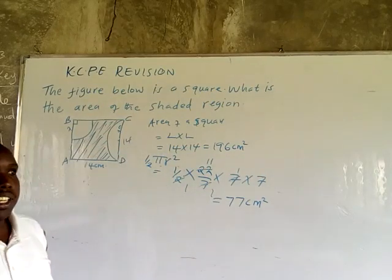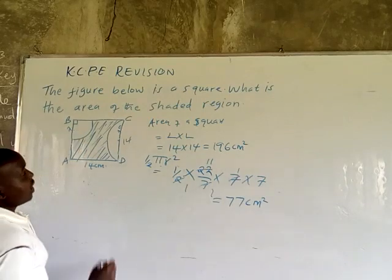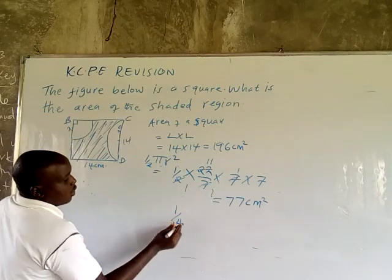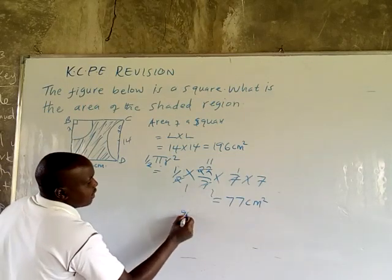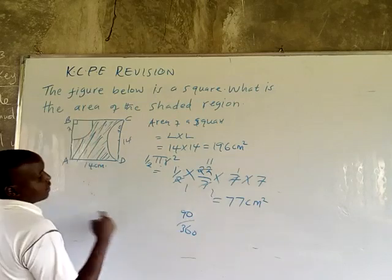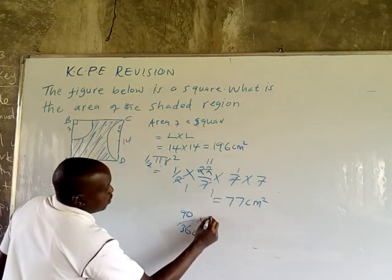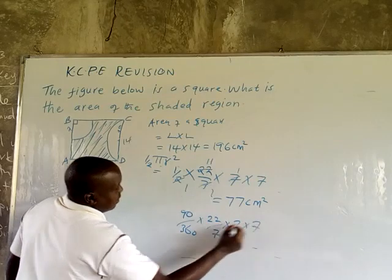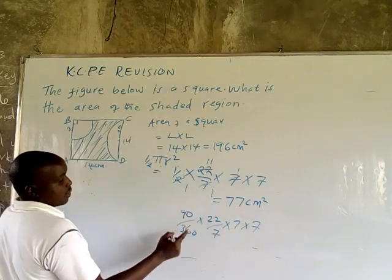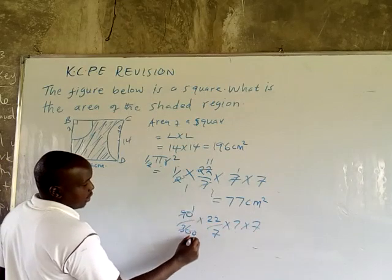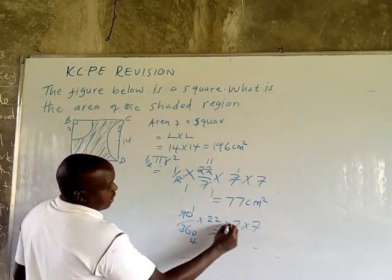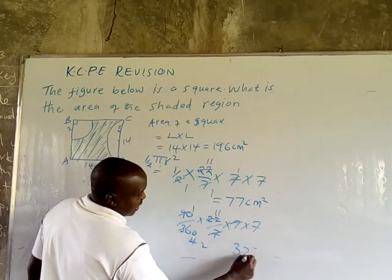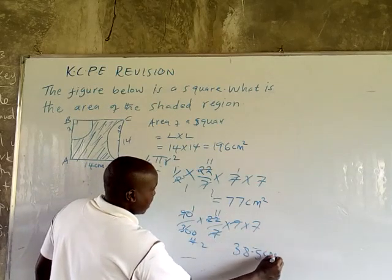Now we want the area of this quarter circle. This one is a quarter, so it is 1 over 4. One quarter means 90 degrees. So: 1 over 4 times 22 over 7 times 7 times 7. A quarter of 22 over 7 times 49 gives us 38.5 cm².